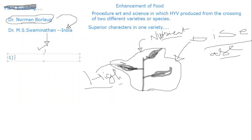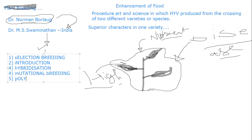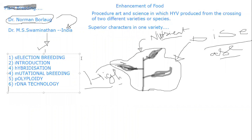The different procedures by which plant breeding is carried out include: collection and selection, introduction, hybridization, mutation breeding, polyploidy, recombinant DNA technology, and protoplasm fusion, among others.